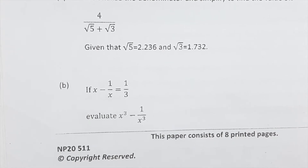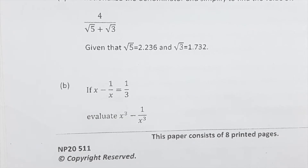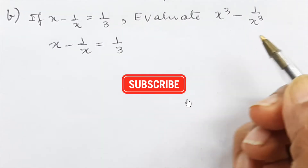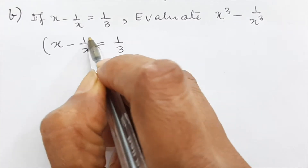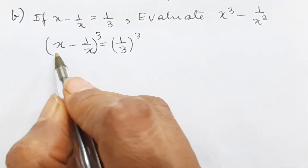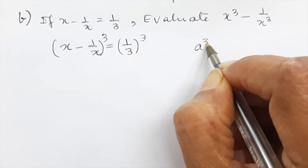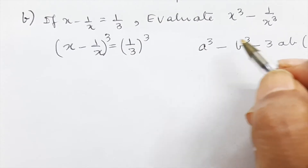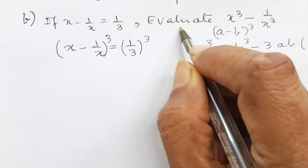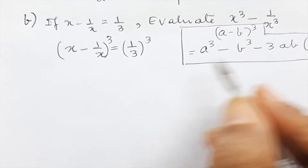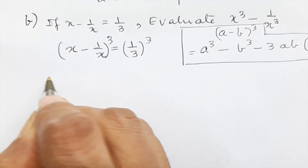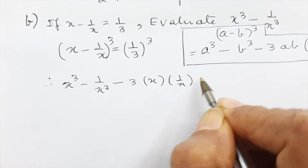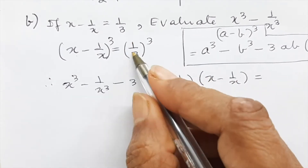Question 1b: if x − 1/x = 1/3, evaluate x³ − 1/x³. We take the cube of both sides using the formula (a − b)³ = a³ − b³ − 3ab(a − b). So we write x³ − 1/x³ − 3 · x · (1/x) · (x − 1/x) = (1/3)³.